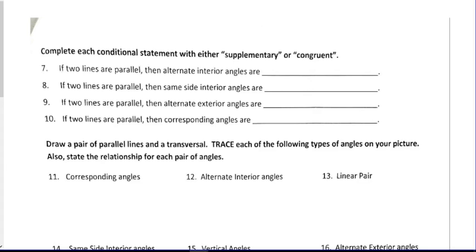Complete each conditional statement whether it's supplementary or congruent. Remember, supplementary means 180 congruent means equal. So, two lines are parallel, then alternate interior angles are equal. Same side interior, remember, for same side interior, that's going to be this one and this one. One obtuse, one acute. So, supplementary. Alternate exterior angles, just like alternate interior, they're either both acute or both obtuse. Corresponding, again, one inside, one outside, but in that case, both acute or both obtuse, so equal.